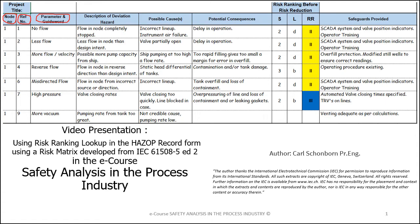Columns 3 and 4 will be automatically transcribed from the checklist — in other words, no flow and flow in the node completely stopped. The next column, possible causes, is considered by the team, and when the facilitator is satisfied the team has reached consensus, the scribe will type in the cause in this column. For the purposes of this video, we are not dealing with all the parameters and guide words possible in this node. We have used 7 examples of parameters and guide words to give us the deviations and the hazard.